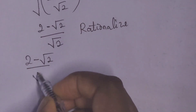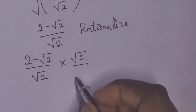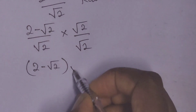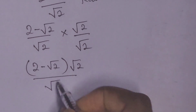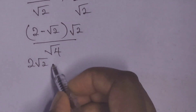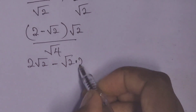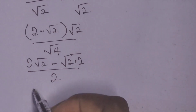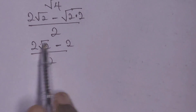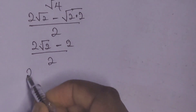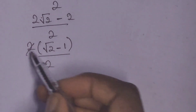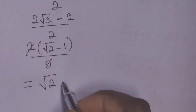We rationalize by multiplying 2 minus root 2 over root 2 by root 2 over root 2. Opening the bracket in the numerator, we get 2 root 2 minus root 2 times root 2, all over 2. So we have 2 root 2 minus 2, all over 2. From the numerator, we factor out 2 to get 2 times root 2 minus 1, all over 2. The 2s cancel, leaving us with root 2 minus 1.